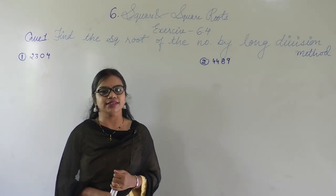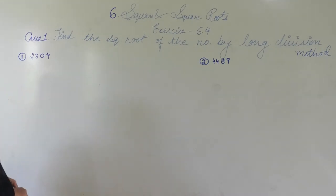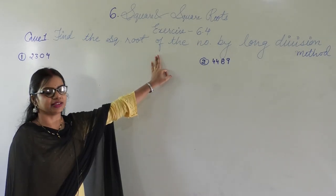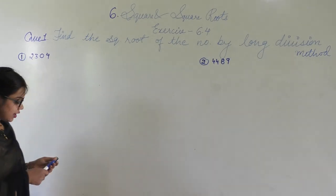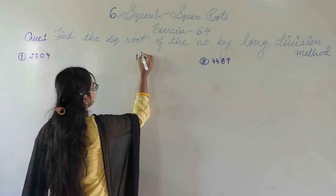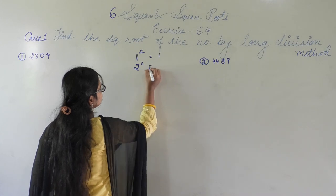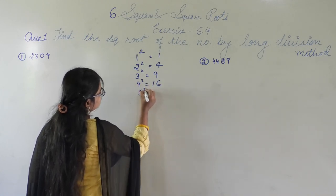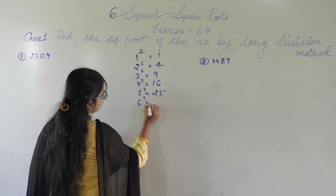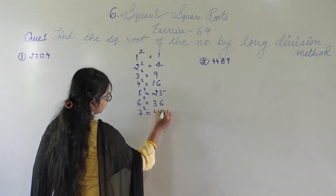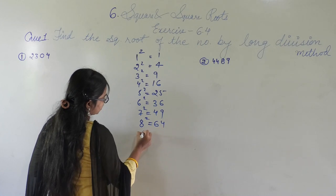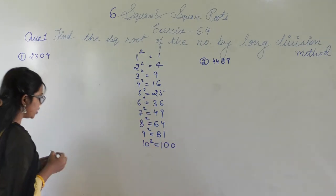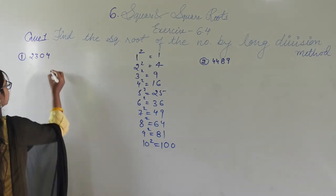Good morning. Today we will start a new exercise — Exercise 6.4 of Chapter 6: Squares and Square Roots. The first question asks us to find the square root of a number by the long division method. Before we begin, I will write down the squares of numbers from 1 to 10: 1²=1, 2²=4, 3²=9, 4²=16, 5²=25, 6²=36, 7²=49, 8²=64, 9²=81, 10²=100.